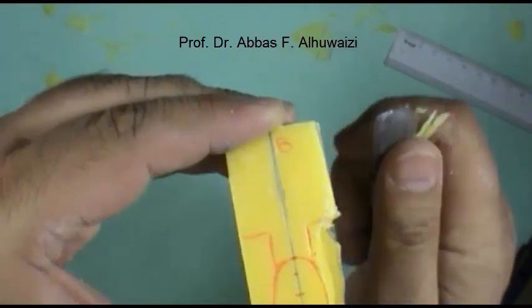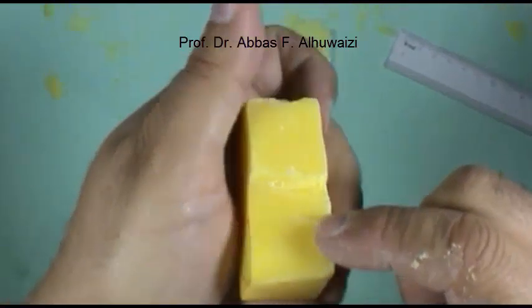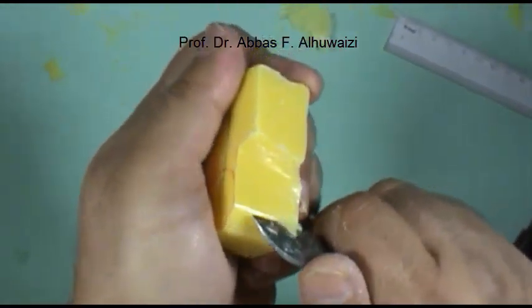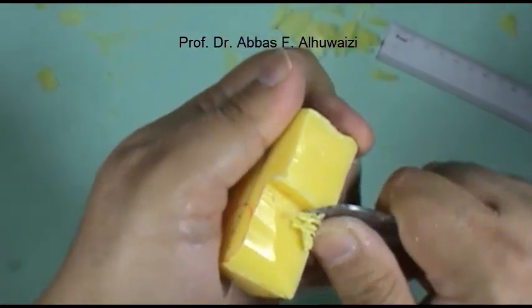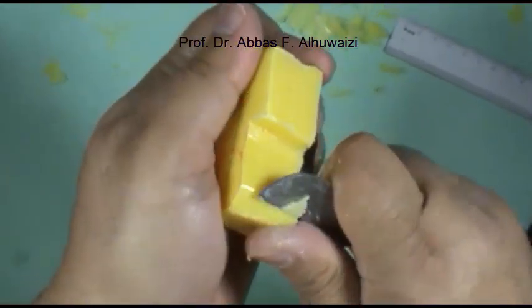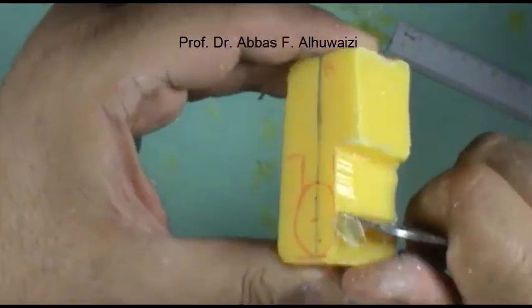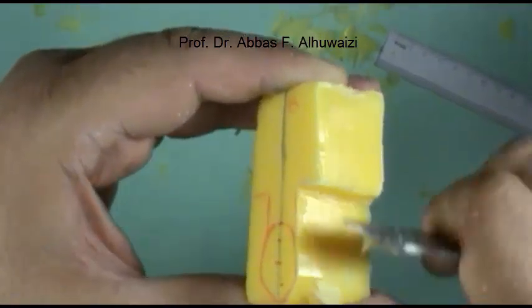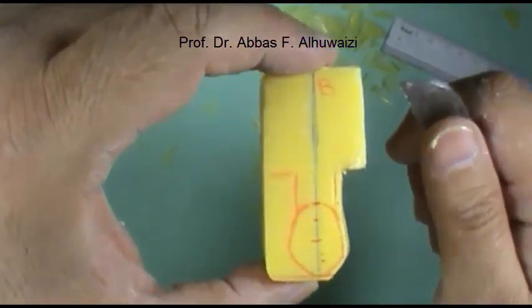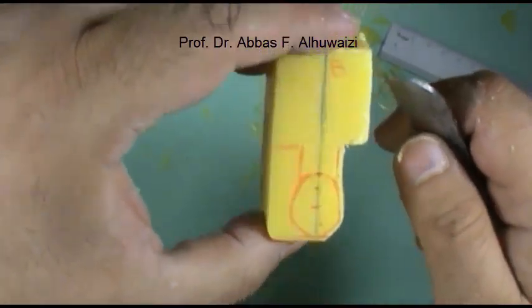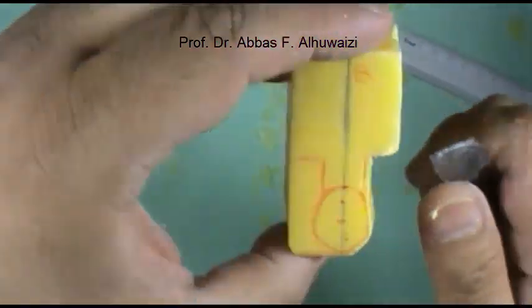Now we have to cut these areas by holding the wax knife parallel to the other surface. We have to check it every now and then and keep cutting until we get a surface which is parallel to the other side of the block.